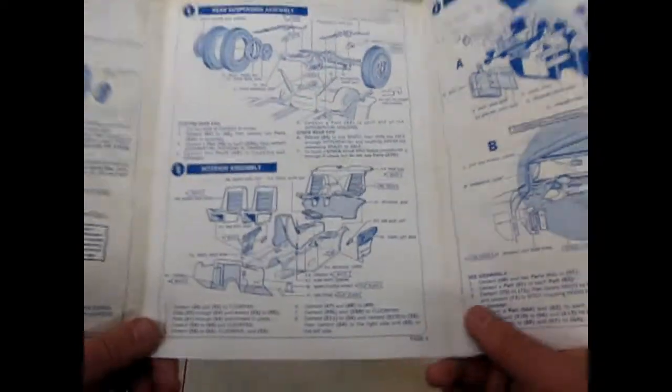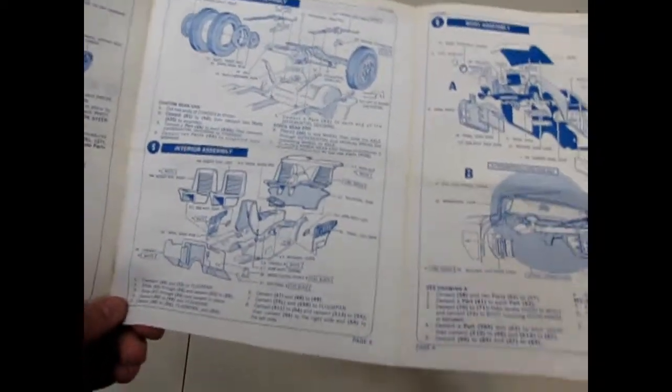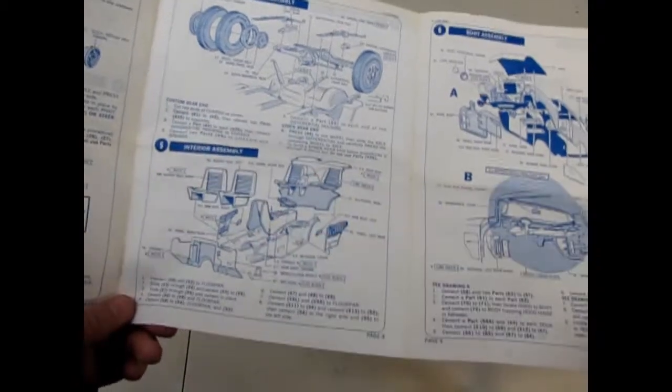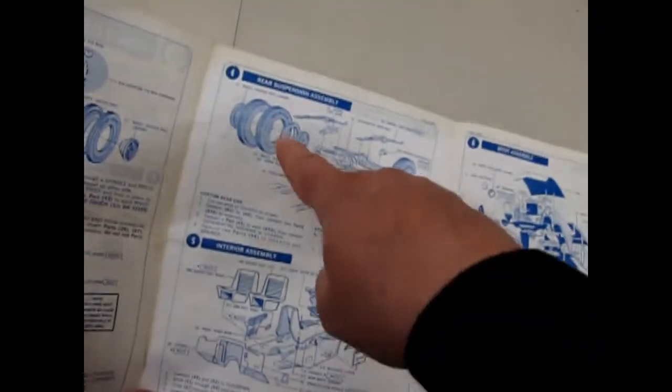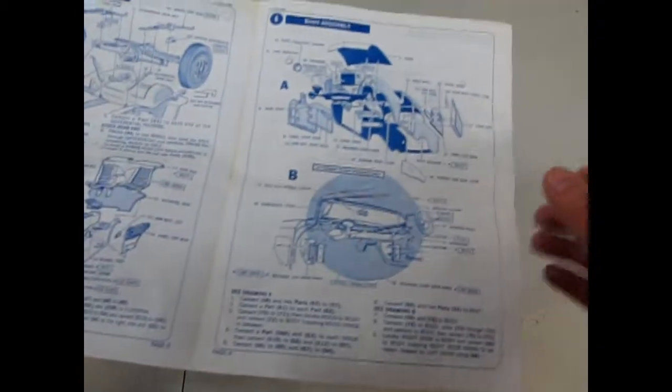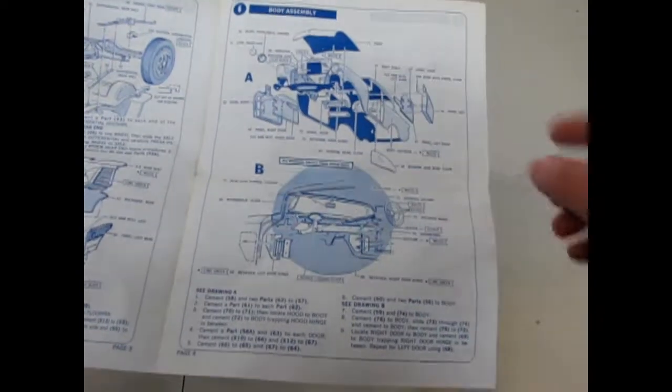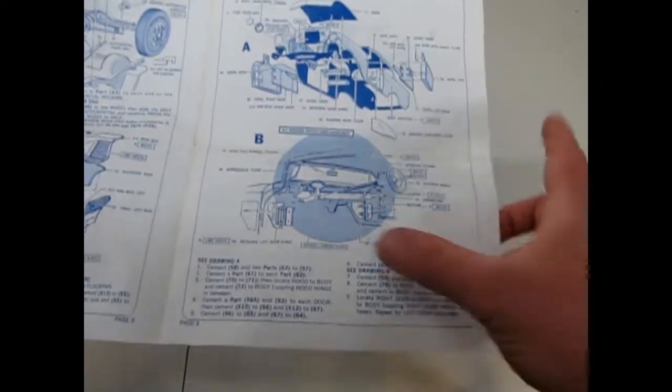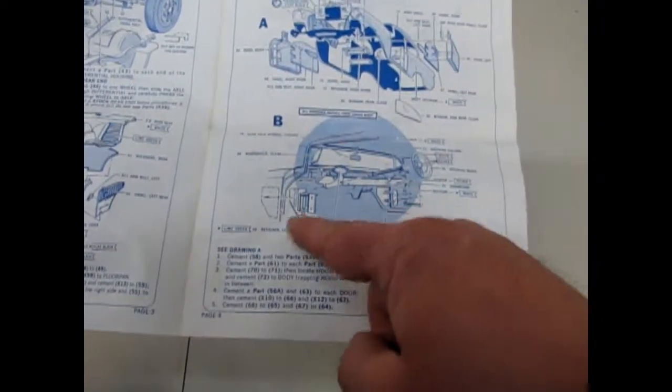They also have little flags for the colors of paint you're going to use. Kind of interesting to see a blueprint style. This car, you could almost build stock except for one problem. The interior is fully customized, so there goes your idea for building it stock. It's got the multi two-piece tire assembly. Opening doors, hood and trunk.